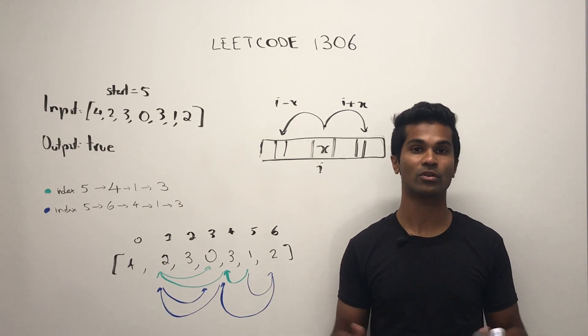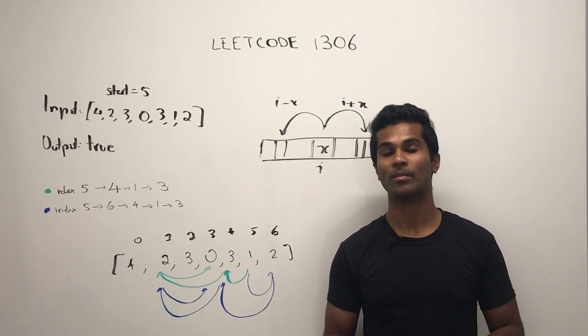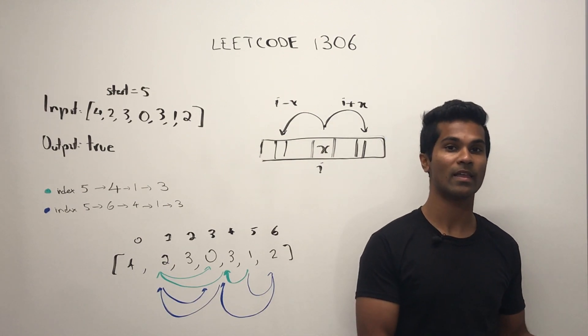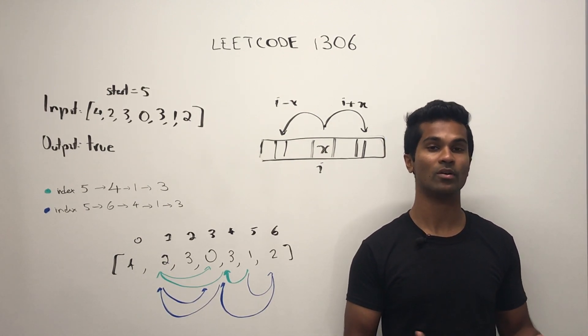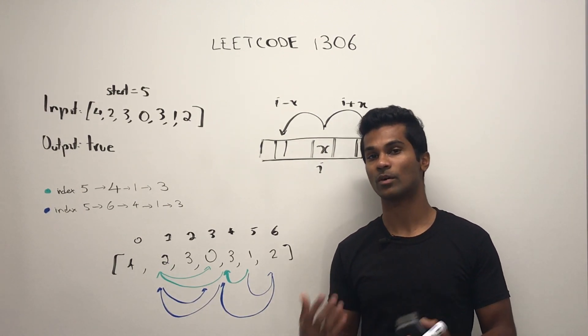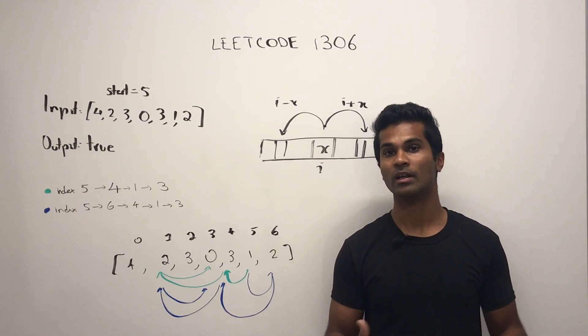If it does, I can just return true. If not, well, maybe I can try jumping to the left and seeing if that one's equal to zero, or maybe jumping to the right and seeing if that one's equal to zero.